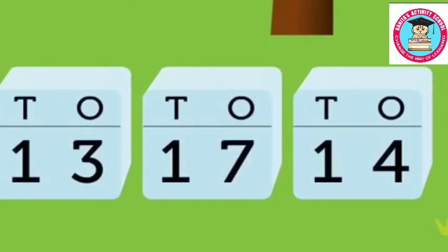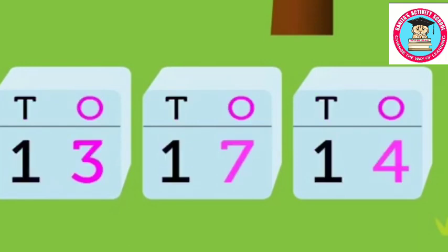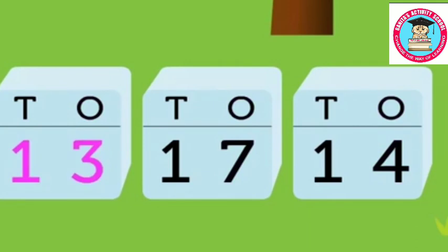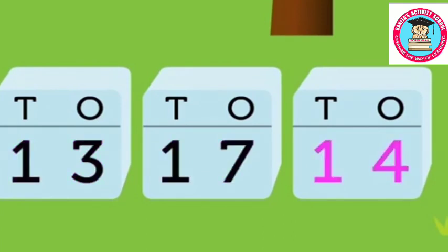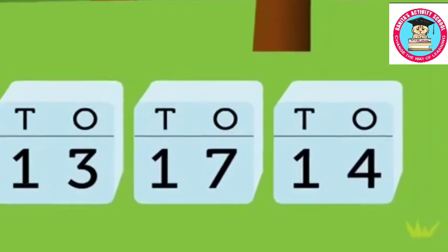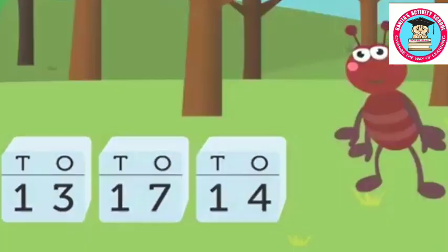Each sugar cube has a number on it in the form of tens and ones. The numbers are 13, 17, and 14. Let's arrange 13, 17, and 14 in ascending order with the help of this.